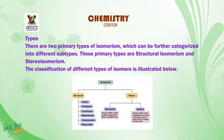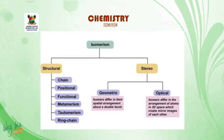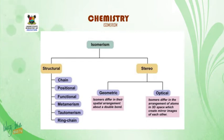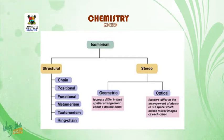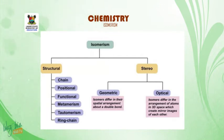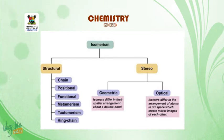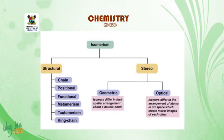Looking at the chart, isomerism is divided into structural and stereo. Under structural isomerism, we have six subtypes: chain, positional, functional, metamerism, tautomerism, and ring chain structural isomerism. Stereoisomerism can be classified into two: geometric and optical isomerism. In geometric isomers, the compounds differ in their spatial arrangement about a double bond, while optical isomers differ in the arrangement of atoms in 3D space, which creates a mirror image of each other.